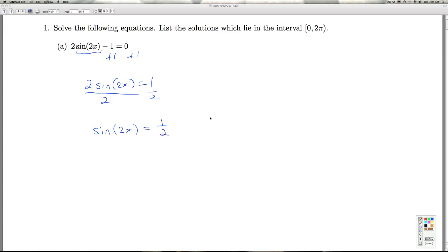So now mentally I think, I've got the sine of something equal to 1/2. So where does that happen?